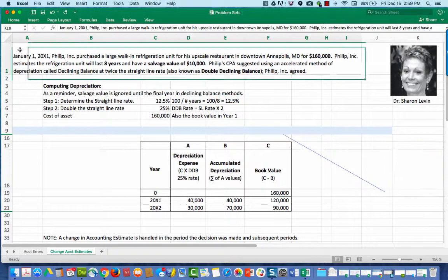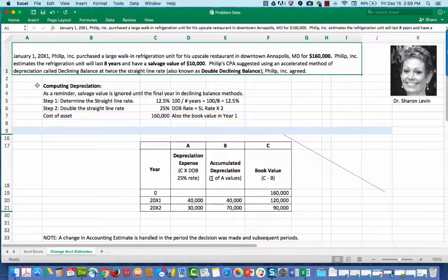In this problem on January 1st, 2000X1, Phillip Incorporated purchased a large walk-in refrigeration unit for his upscale restaurant in downtown Annapolis for $160,000. Phillip Inc. estimates the refrigeration unit will last eight years and have a salvage value of $10,000.